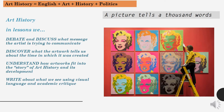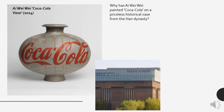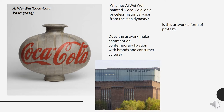To give you an example of what we might be thinking about in an art history lesson: this vase by Ai Weiwei called the Coca-Cola Vase — of which there are many — begs a lot of interesting questions. Why has Ai Weiwei painted Coca-Cola on a priceless historical vase from the Han dynasty? Is this artwork a form of protest? Does the artwork make comment on contemporary fixation with brands and consumer culture? And does this artwork tell us about Ai Weiwei's political activism and his 2011 arrest?